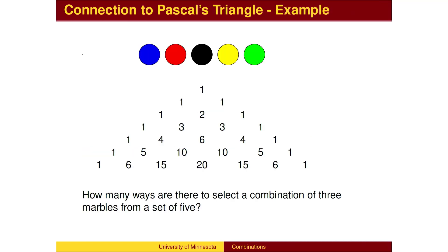Here is an example. How many ways are there to select a combination of 3 marbles from a set of 5, when we don't care about the order? To find the answer, we need to find the 5th row, since we are choosing from 5 total marbles.